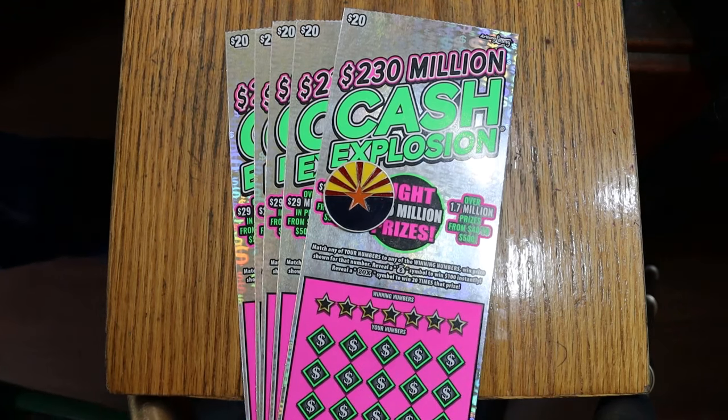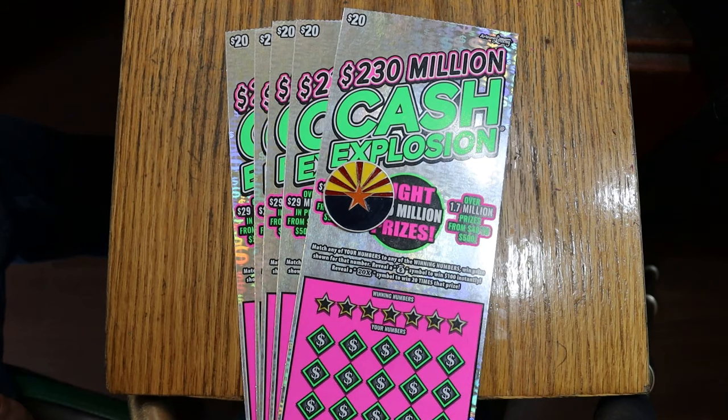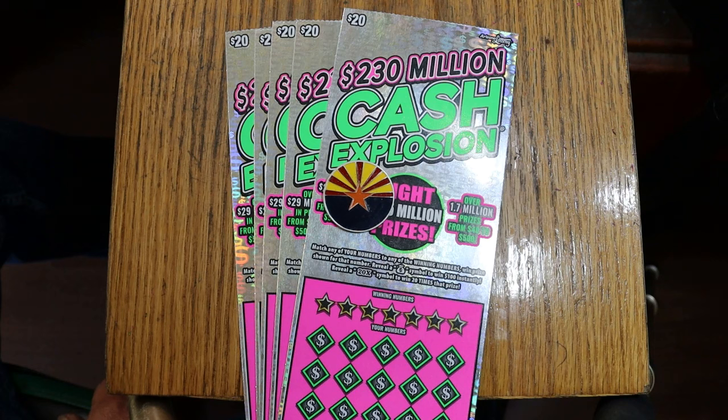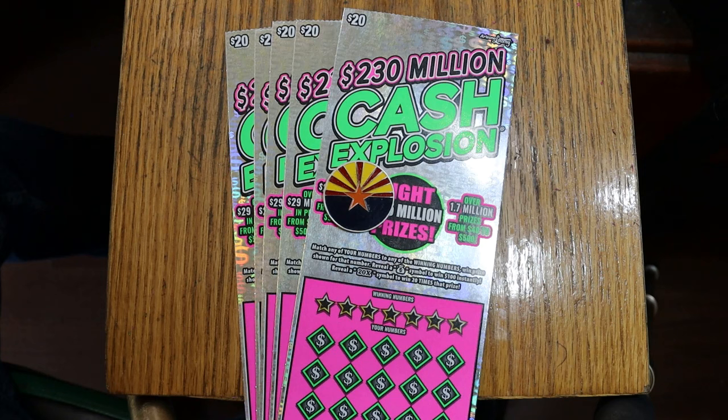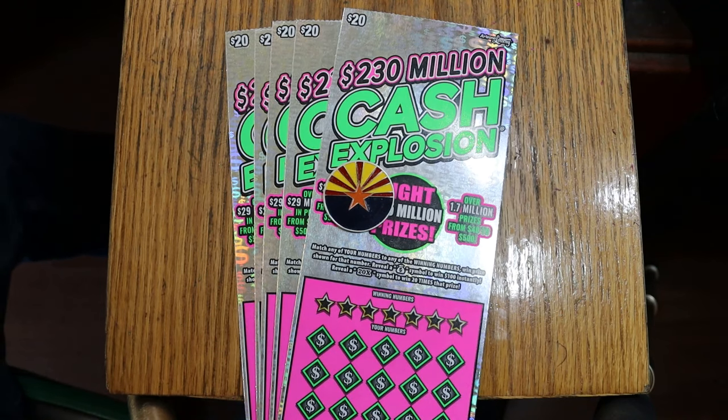What's up, YouTube AZ Scratchers, and welcome to part two of the full book of the Arizona Lottery's $20 cash explosion, and we're going to see how it goes. I have tickets number 006 through 11, book number is 152647, odds are 1 in 3.09.